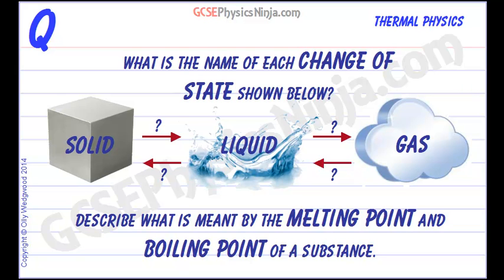Matter, atoms, molecules come in three basic states: it can be a solid, it can be a liquid, or it can be a gas. There is a fourth state called a plasma, which is found in stars because it's so hot, but we don't need to consider that just yet.